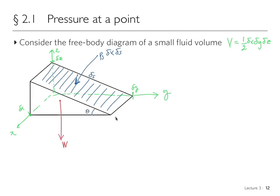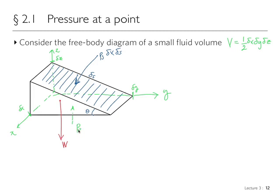The pressure force on the bottom wall is PZ times the area Delta X times Delta Y. The pressure acting on the back wall is PY times the area Delta X times Delta Z. We have that wall, the bottom, and we're going to ignore the two side walls as those cancel out.